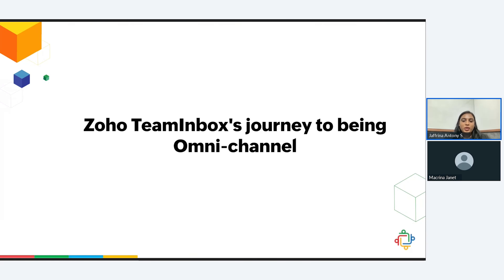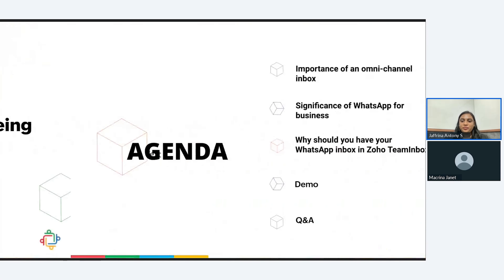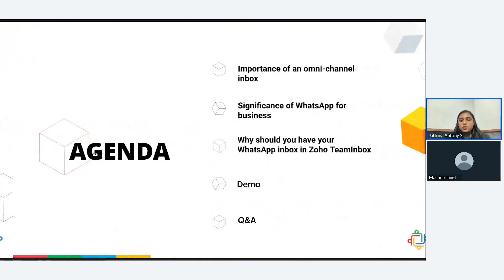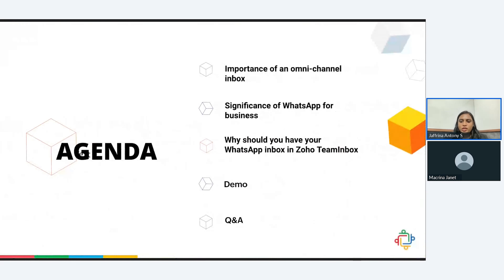Today, it is the email channel that we have, and we now have WhatsApp and Telegram. We are also working on a lot more. Here's the agenda for today's session. First, we'll discuss about what an omnichannel inbox is and its importance. Then we'll speak about the significance of WhatsApp as a business communication channel. Later, we'll talk about the benefits of WhatsApp shared inbox. And then finally, I'll give you a demo on how to create WhatsApp shared inboxes in Zoho Team Inbox.